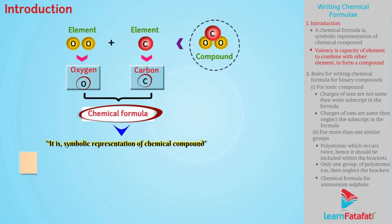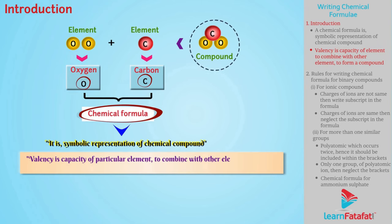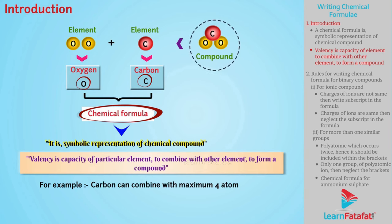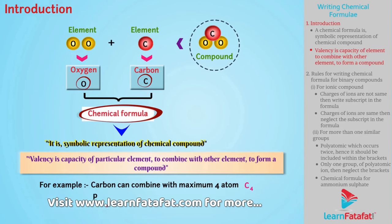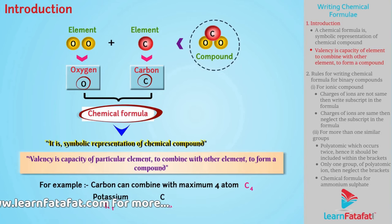Valency is capacity of particular element to combine with other element to form a compound. For example, carbon can combine with maximum 4 atoms. Hence, valency of carbon is 4. Similarly, valency of potassium is 1, calcium is 2, etc.